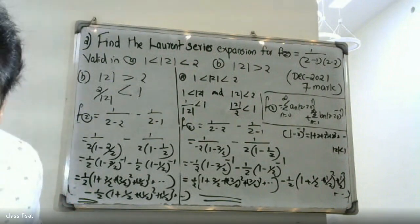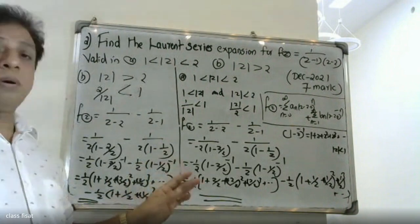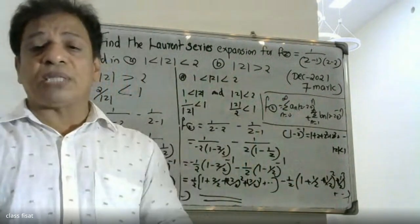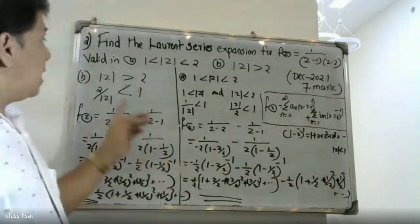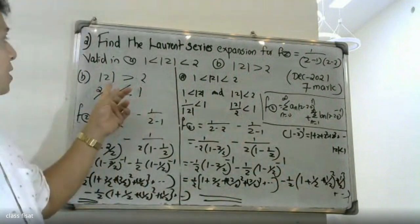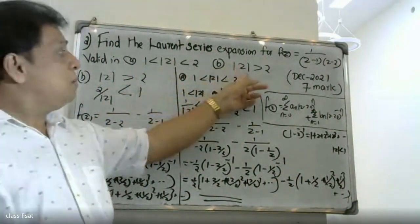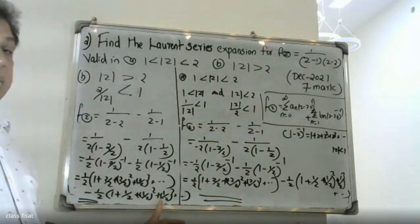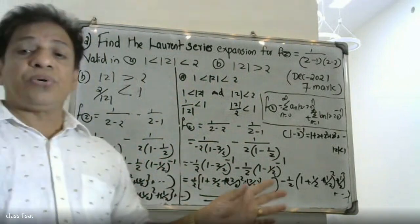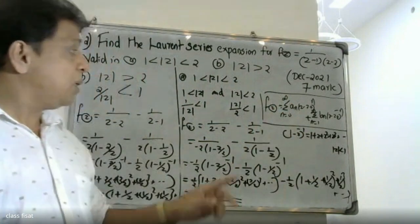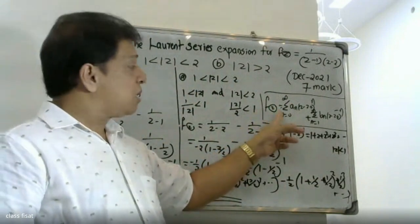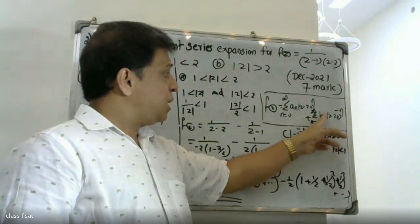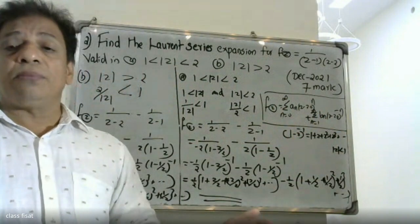To summarize, when we find the Laurent series expansion, the answer contains both the positive power part (analytic part) and the negative power part (principal part). In the Laurent series definition, f(z) equals sigma n equal to 0 to infinity a_n, plus sigma n equal to 1 to infinity b_n times z to the minus n, containing both the positive and negative parts.